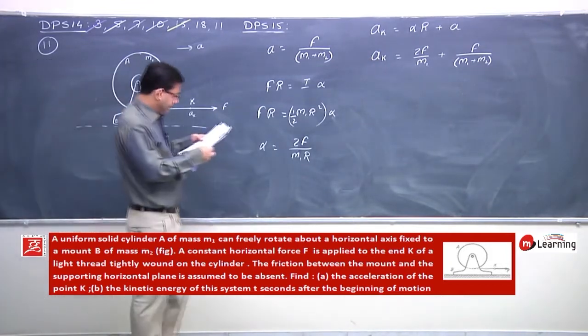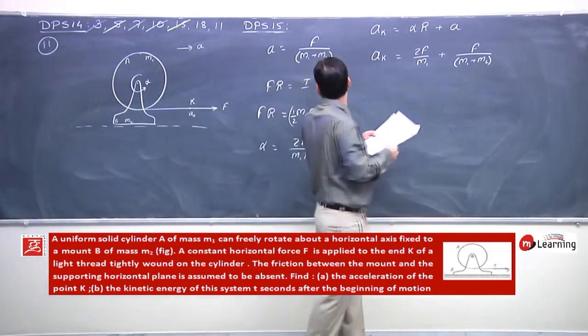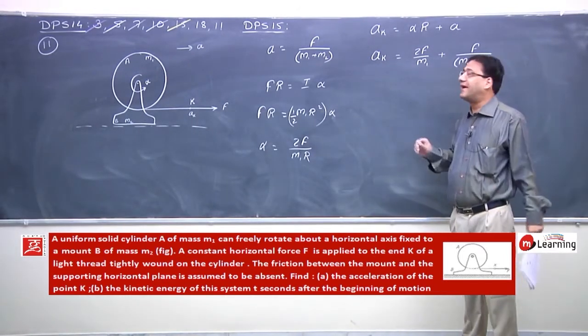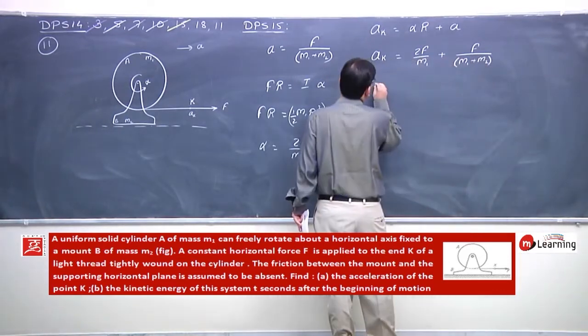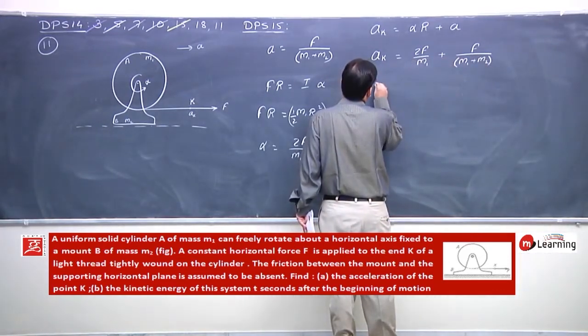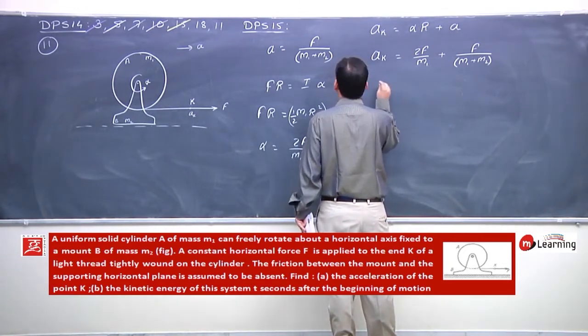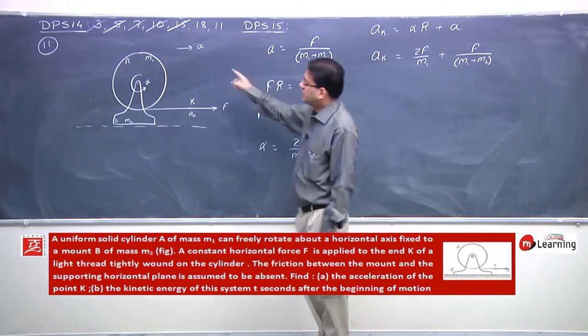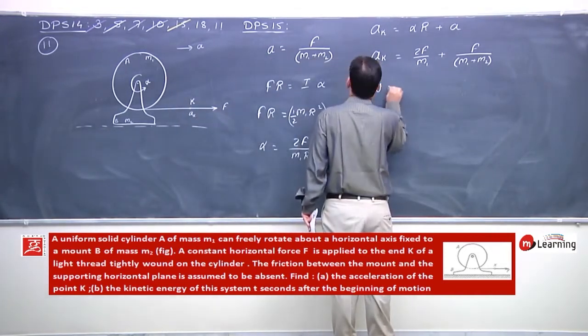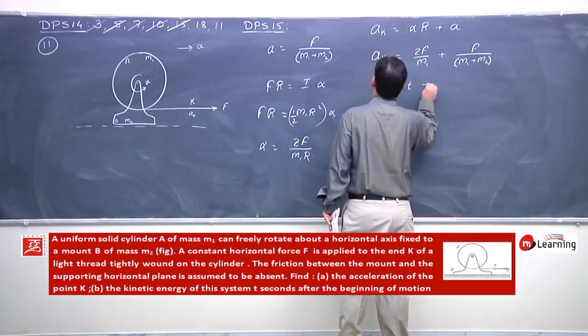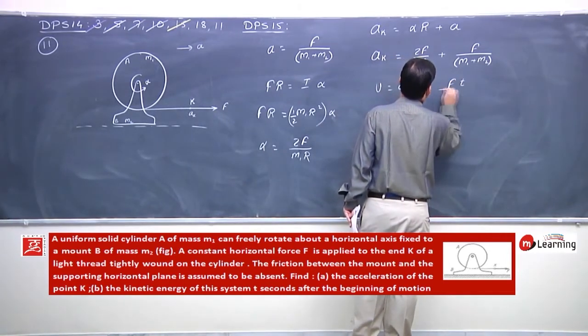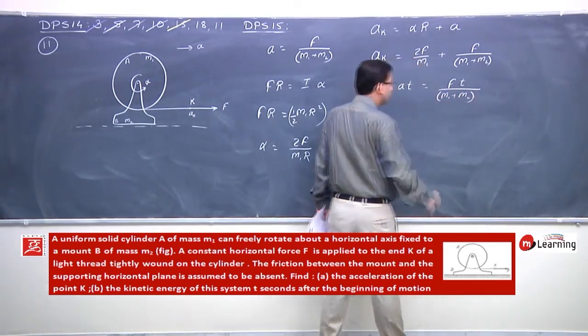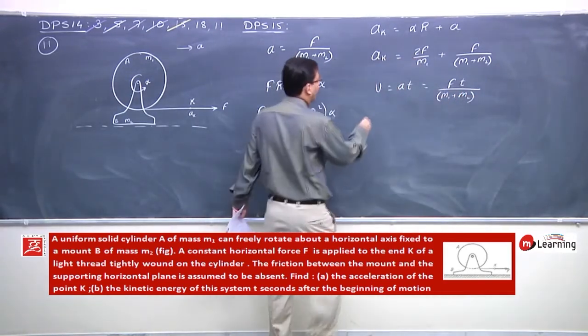Now for kinetic energy of the system after beginning of motion. For kinetic energy, first find the velocity. Velocity of the complete system is A times T, or F T by M1 plus M2. And omega will be alpha times T.